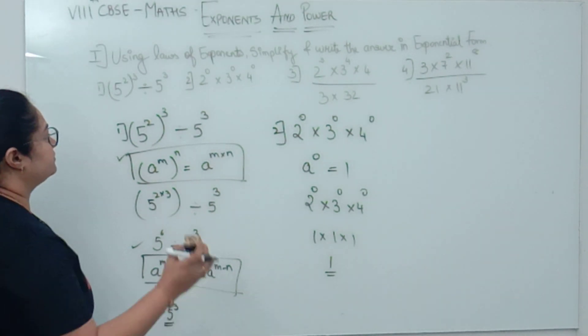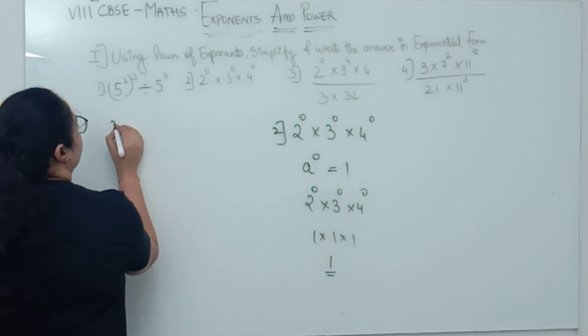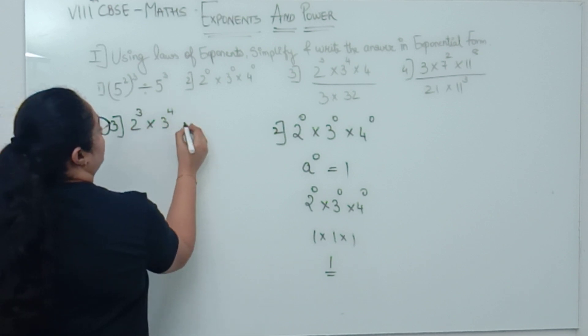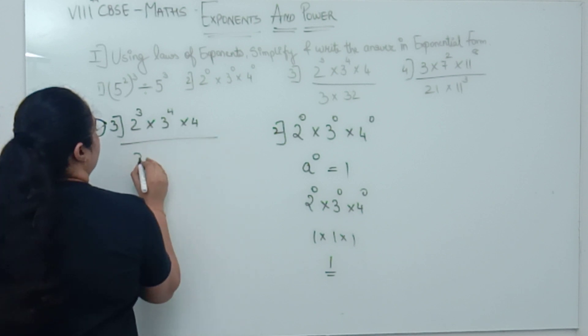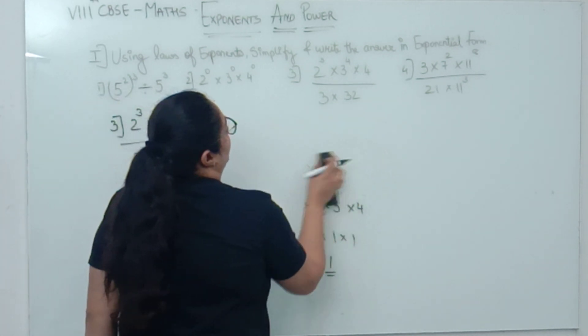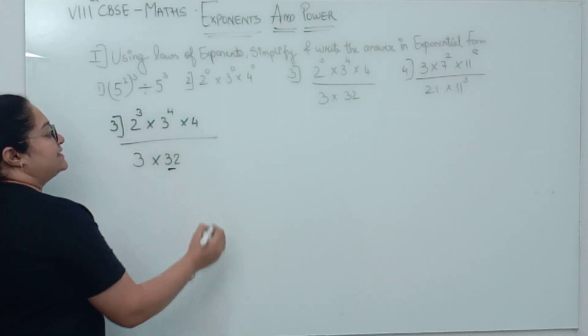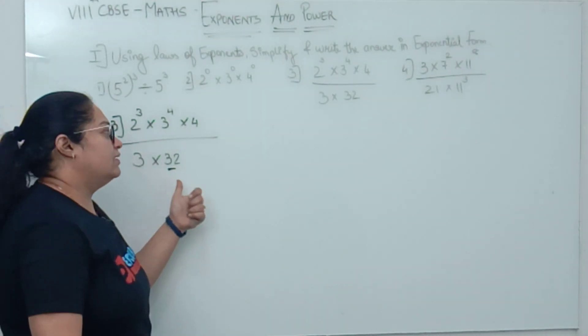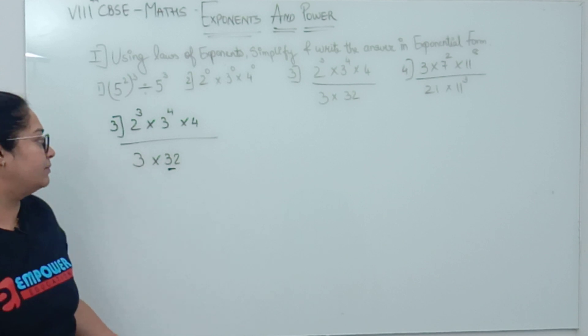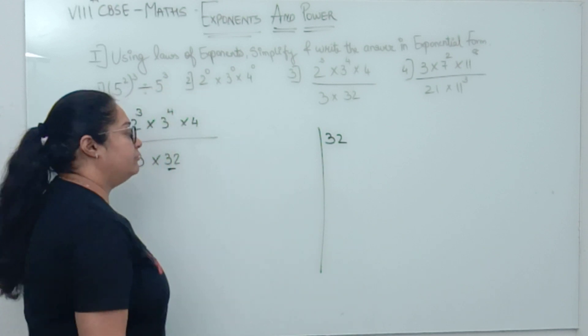Let us see the third sum. 2³ × 3⁴ × 4 upon 3 × 32. Now, in this type of sum, what you have to do is, first you will make the bases similar. You studied prime factorization in your sixth standard. That will be applicable here. Now, 32 is a bigger number. So, you are going to prime factorize 32.